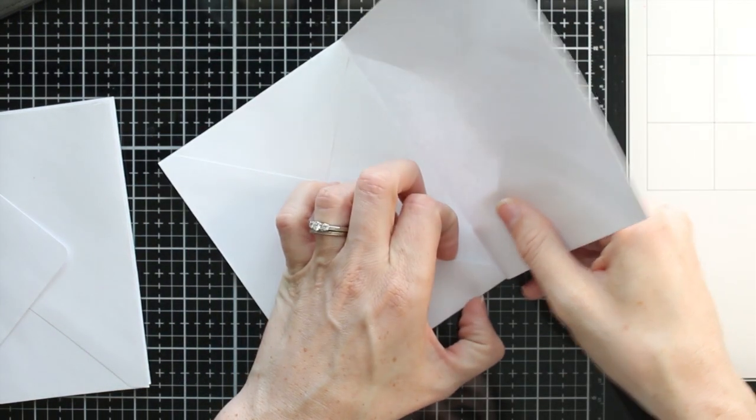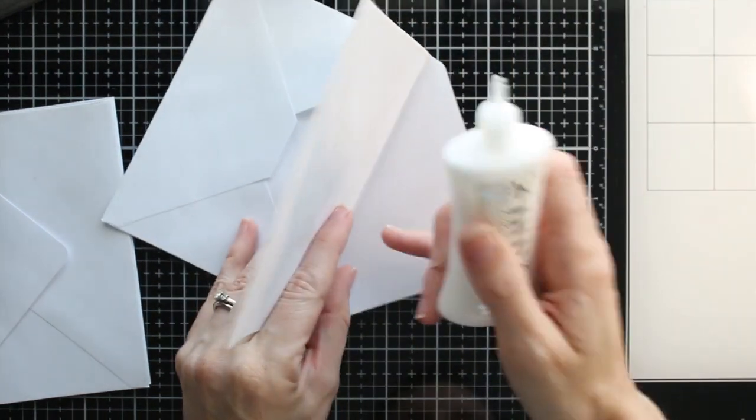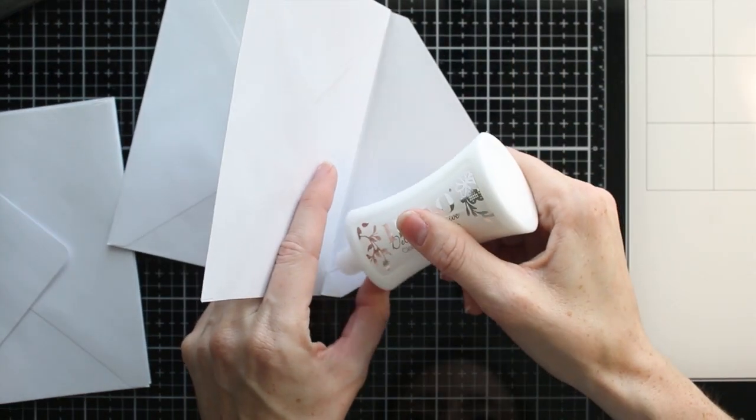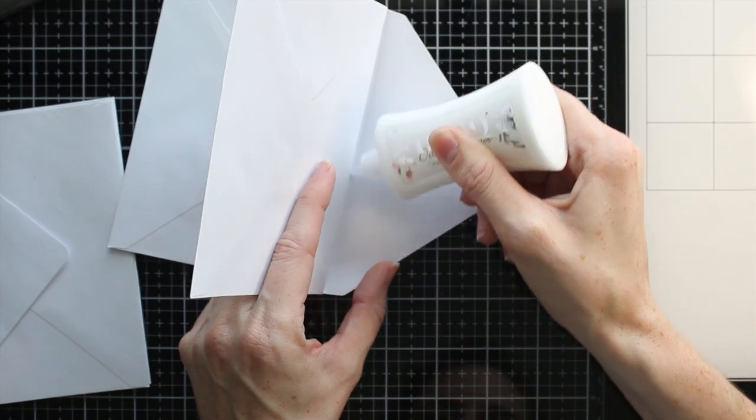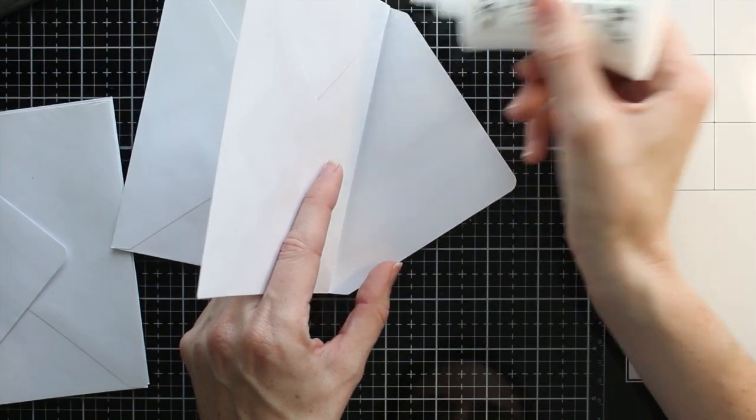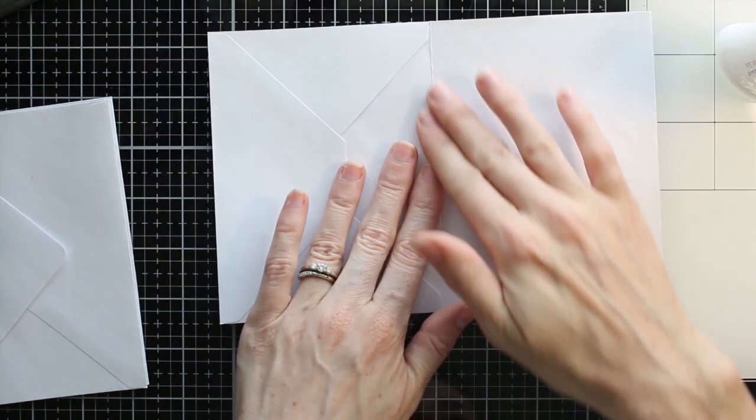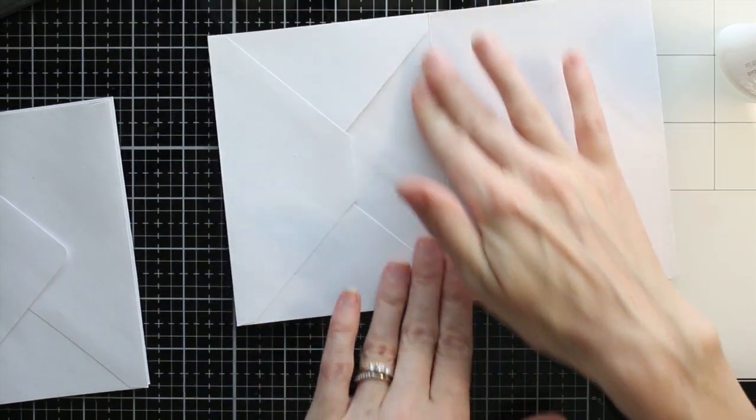You can see here that the page on the left will have a pocket. The page on the right will be a blank page you can then craft on. And I'm putting a little bit of glue behind that flap and adhering it down.